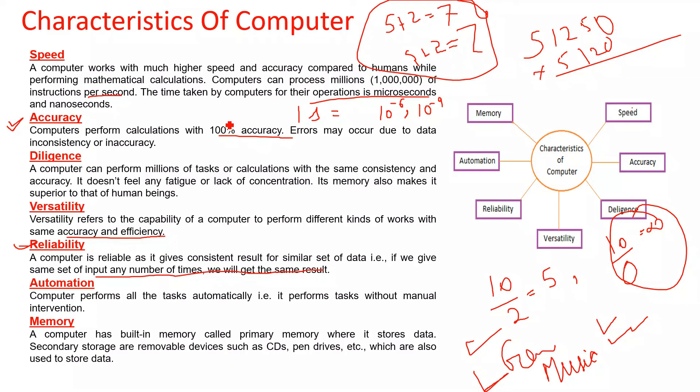Automation. Computer performs all the tasks automatically, that is, performs tasks without manual intervention. For example, when we play music or a movie, it starts and runs smoothly with no intervention. Output is automatically produced.